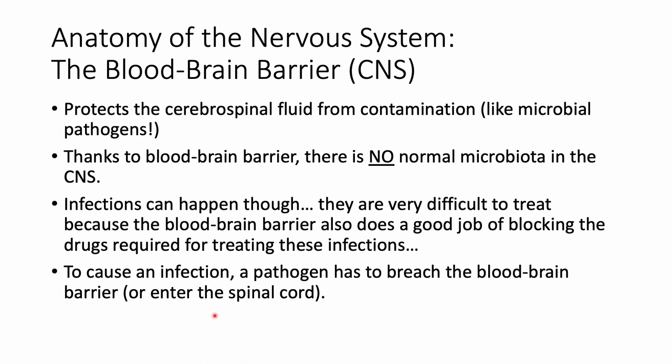To cause an infection, a pathogen has to breach the blood-brain barrier and gain access to the cerebrospinal fluid. One way it can do that is called the Trojan horse method: certain pathogens can intracellularly infect cells, like a white blood cell, and that white blood cell gains access to the central nervous system, smuggling the pathogen past the blood-brain barrier.